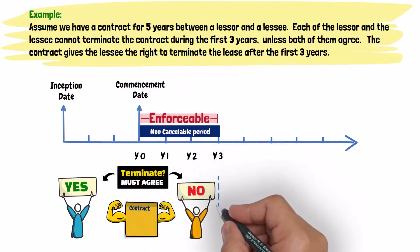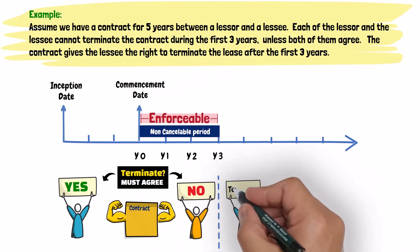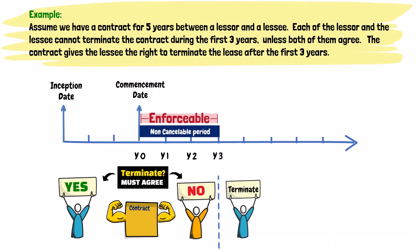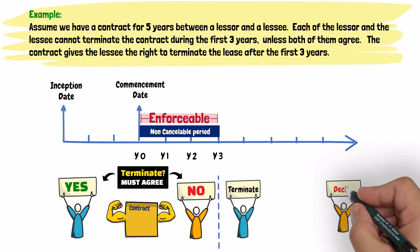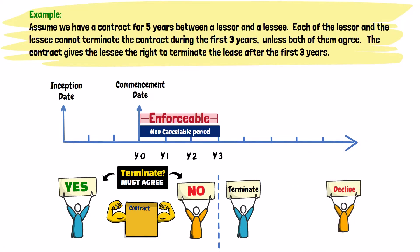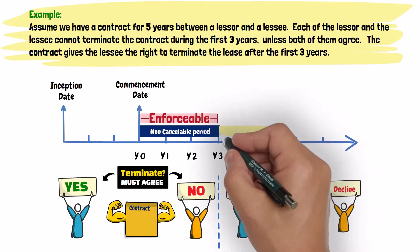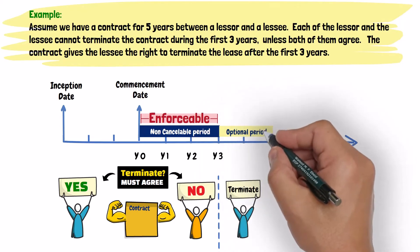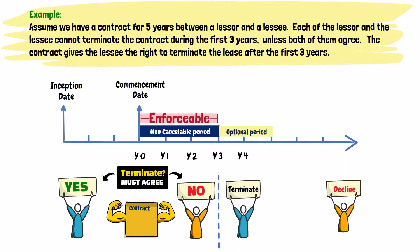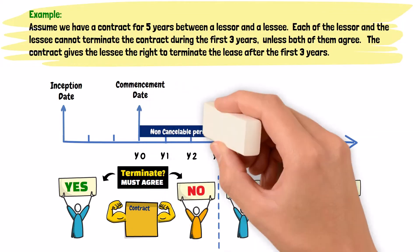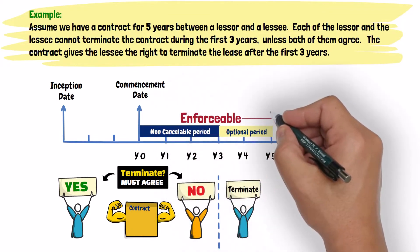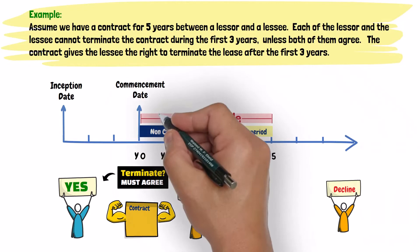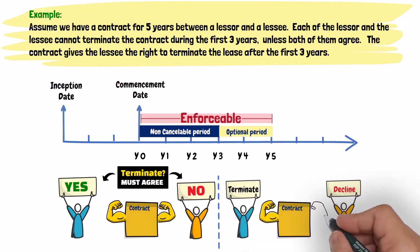The contract also gave the lessee the option to terminate the lease after the first three years. If the lessor can decline the lessee's request to terminate the contract, this means that the lessee is forced to complete the agreement for the remaining two years. In other words, the lease is enforceable for the full five years — the non-cancellable period of three years plus the two years of the optional period.